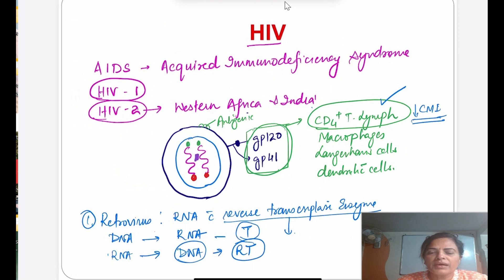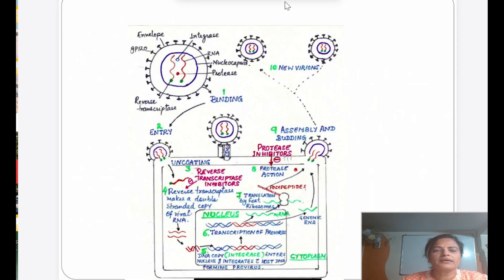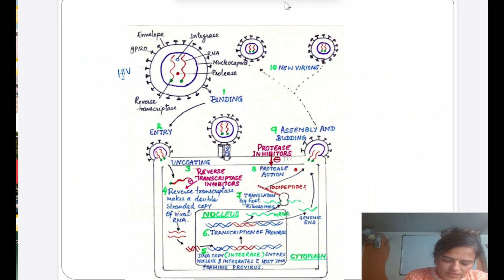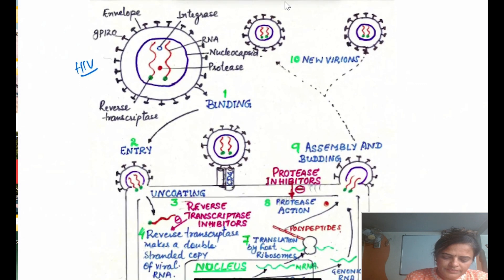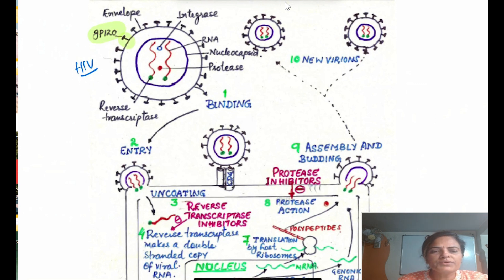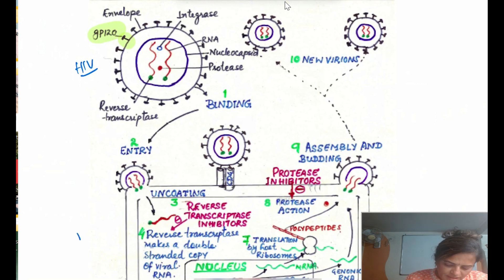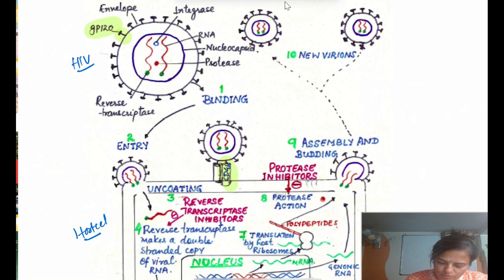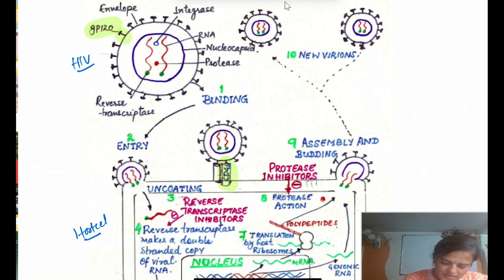Now, how does this virus replicate? It attacks CD4-positive T lymphocytes. The HIV virus has surface proteins GP120 and GP41. GP120 helps attachment to the host cell — the CD4-positive T lymphocyte. Along with CD4, there is another co-receptor, CCR5.